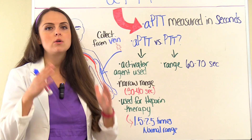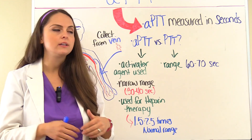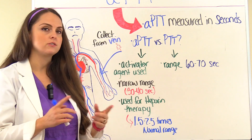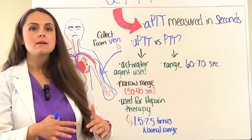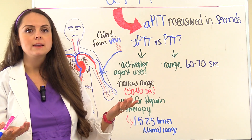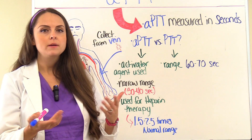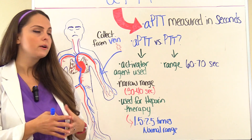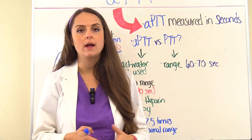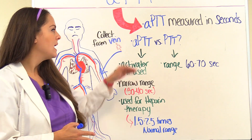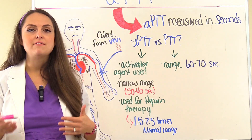Because of the activator agent, the APTT gives a more narrow range. These ranges vary depending on the lab, but generally about 30 to 40 seconds is your normal range. But if your patient is on heparin, you want them a little bit higher than that, because we want to prolong clot formation. With heparin therapy, you want them about one and a half to two and a half times the normal range for them to be therapeutic. For a PTT, the range is about 60 to 70 seconds.